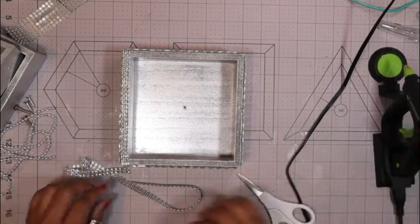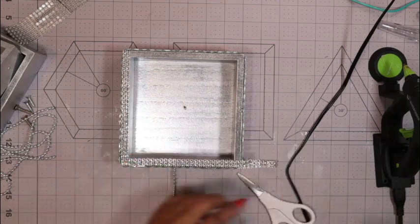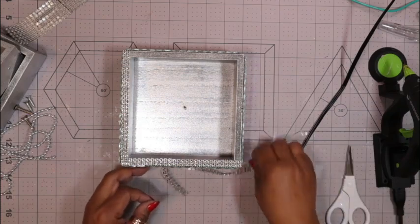After I finished blinging out around the edges, I came in with some diamond wrap across the top so that we could make sure that the top had a finished look to it as well, and I just finished blinging that out.